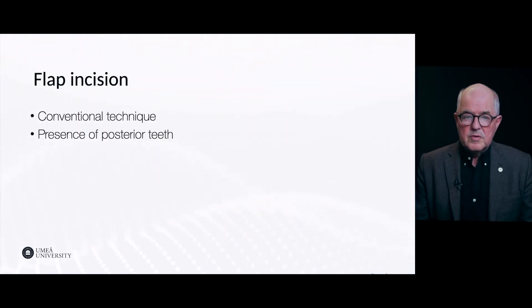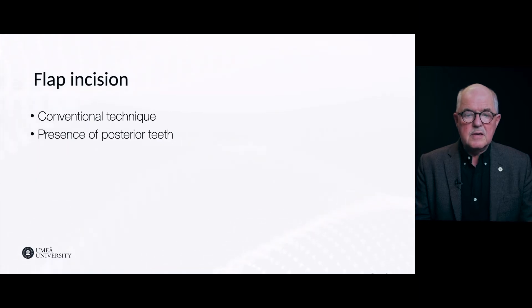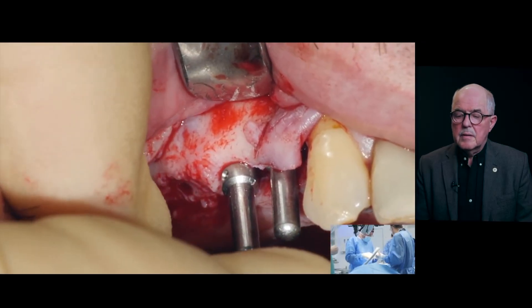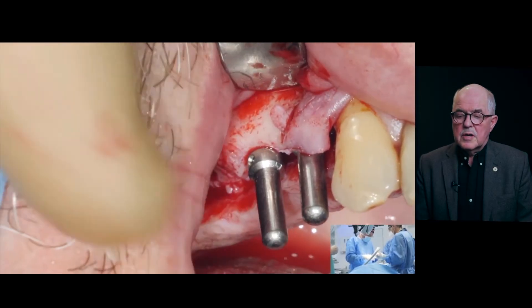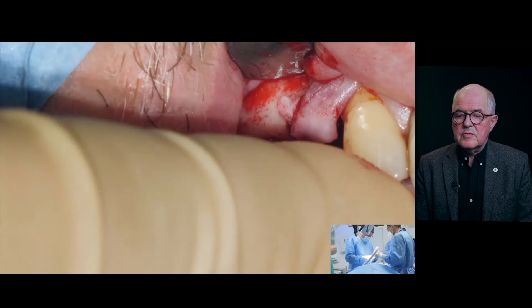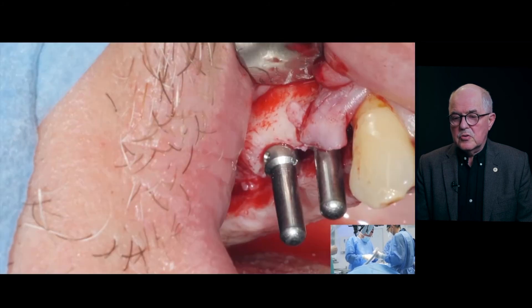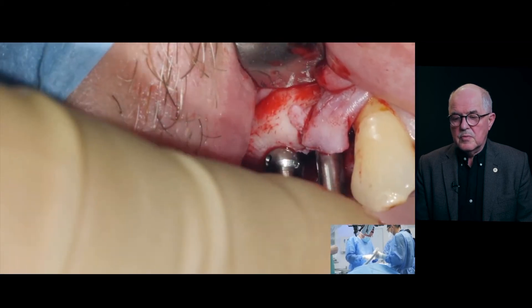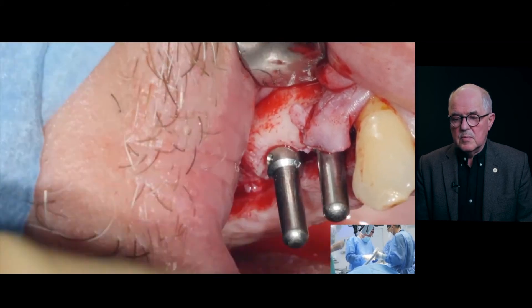We will start with a flap incision, a conventional technique in the presence of posterior teeth. Here we can check the position of the implants in relation to the opposing teeth in the mandible.